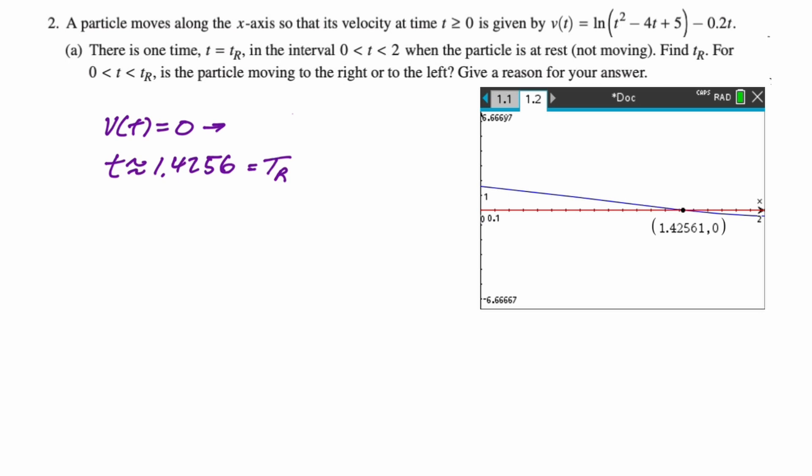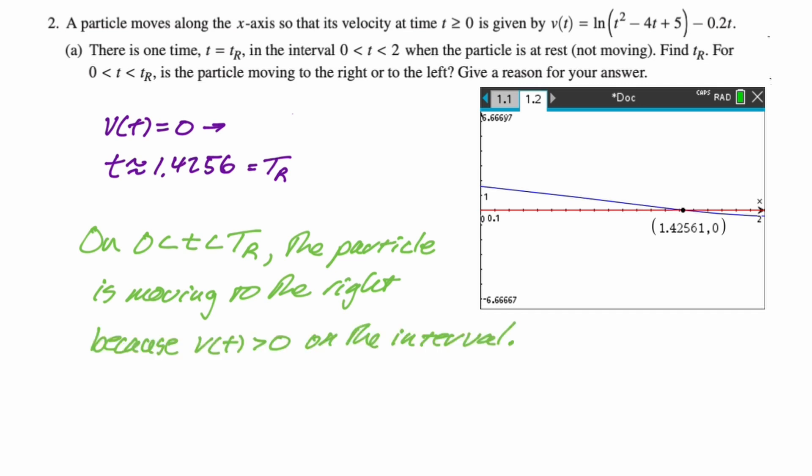And then what we need to do is say that on the interval from 0 to t r, velocity is greater than 0, which means that the particle is moving to the right. So we're just going to write that up. So from 0 to t r, the particle is moving to the right, and then we'll give a reason. Our reason is because v of t is greater than 0 on the interval. And that's just part A. It's really just graph a velocity and find a 0 type of thing.